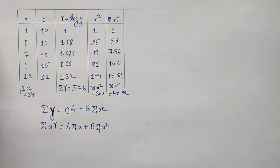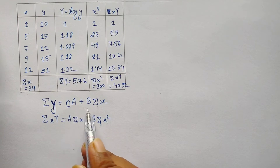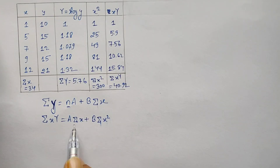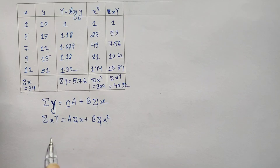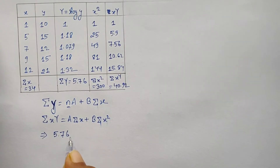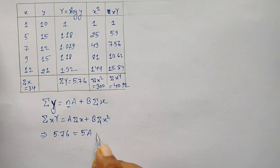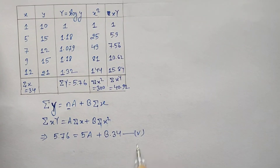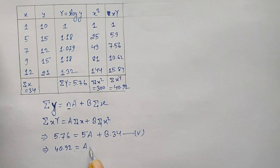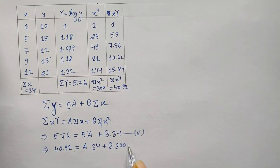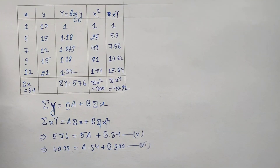Substituting all summation values into the normal equations: equation 5 becomes 5.76 = 5A + 34B, and equation 6 becomes 40.92 = 34A + 300B. We now solve equations 5 and 6 using a calculator.